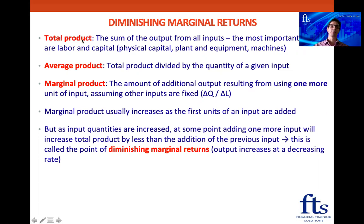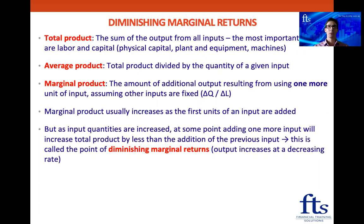So total product is the sum of the output from all the inputs. And the most important inputs we have are labor and capital. And by capital, we mean physical capital, like plant and equipment or machines — not money.